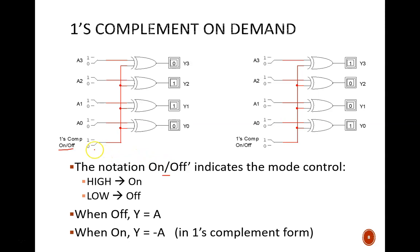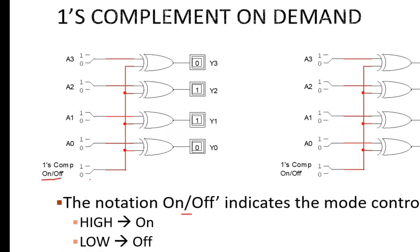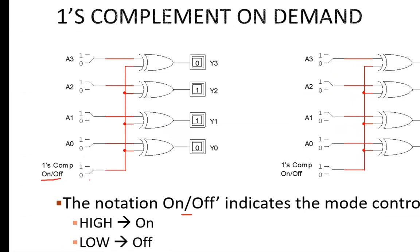So in this circuit, a low control signal turns off the negation. Notice on the left how the input is zero one one zero, and the output is zero one one zero. No change occurred.